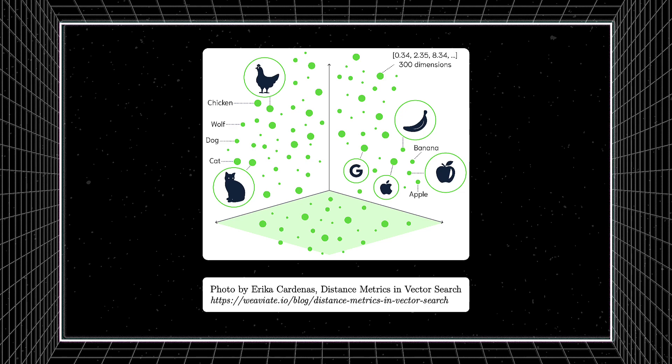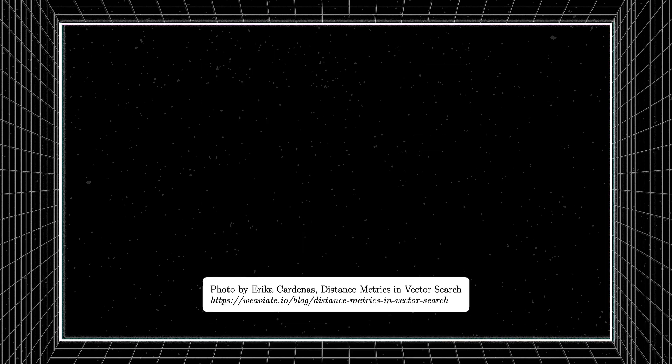The mathematical process of determining how similar these multidimensional objects are involves finding the distance from one point to another in the multidimensional space. This distance metric is the fundamental building block to understanding vector search. There are many approaches to calculating distance metrics, but one thing is the same: the shorter the distance calculated between two embeddings, the higher the similarity.